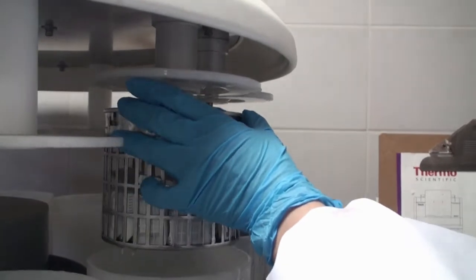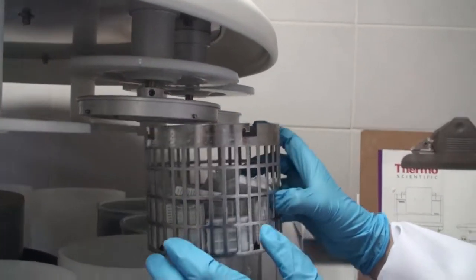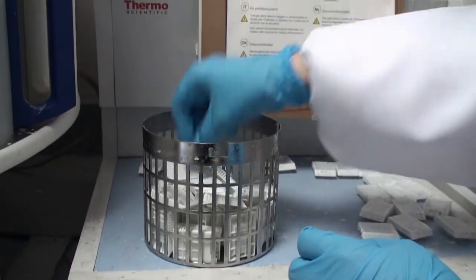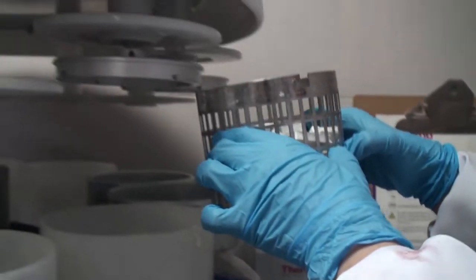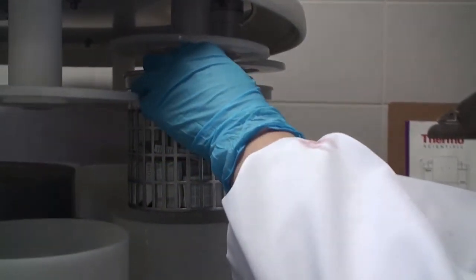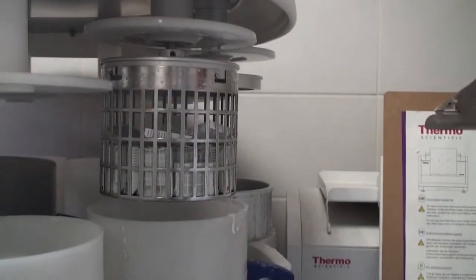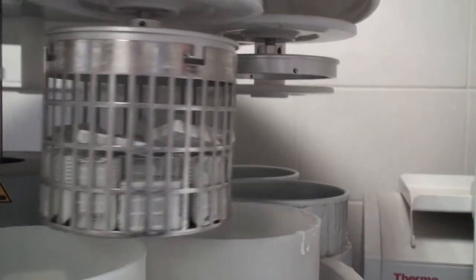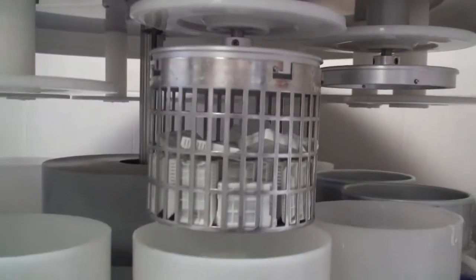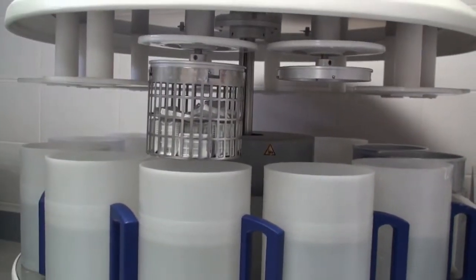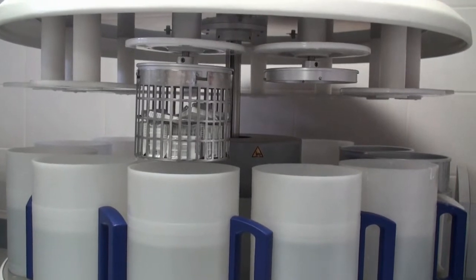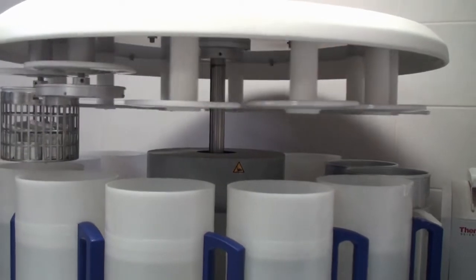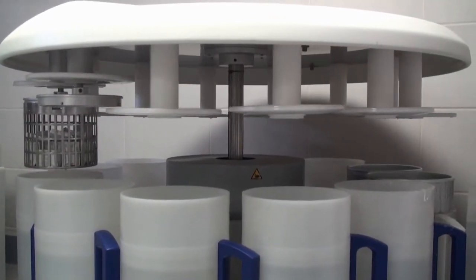Now we will remove the basket and put our cassette in, the cassette that has the specimen. Put back your basket and the program will start moving the basket between different jars containing different materials. First, the paraformaldehyde, then the graded ethanol to reach up to 100% ethanol. This is the dehydration step. And this is done overnight.